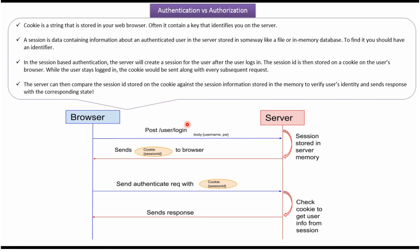Here we will see how session-based authentication works. In the browser, the user enters a username and password and sends the request to the server. The server receives the request and if the username and password are correct, it creates a session. The session is stored in server memory, and then the server sends a session ID with a cookie to the browser. The browser stores the cookie on the client machine. For any further request, the browser sends the cookie with the session ID. The server compares the session ID with the session information stored in memory to verify the user's identity, and if it is valid, the server sends a response back to the browser.